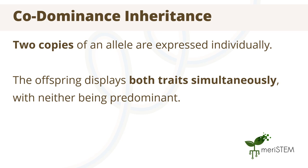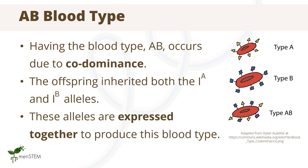Codominance is when two copies of an allele are expressed individually, which results in variations within the trait expressed. This leads to the offspring displaying both traits simultaneously, with neither trait being expressed dominantly. An example of codominant inheritance can be observed for AB blood types. Red blood cells can have different antigens or no antigens at all. Offspring that inherit both the A and B alleles express both together, resulting in individuals having AB blood type where both the A and B antigens are present in the blood cells.